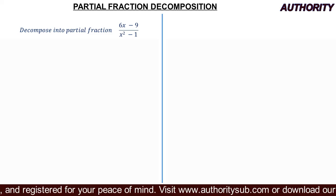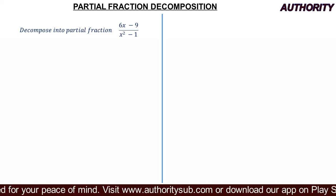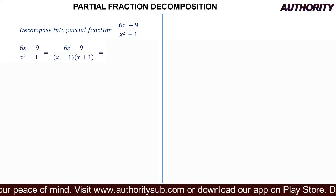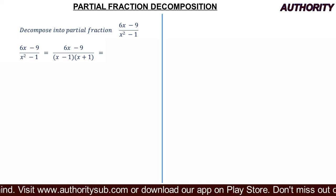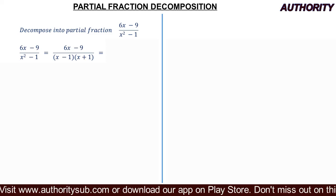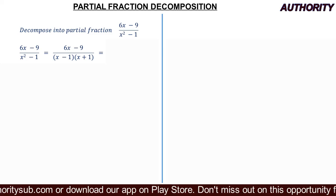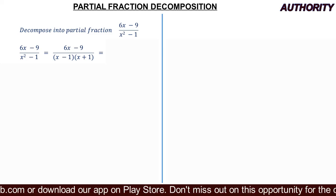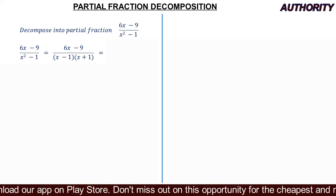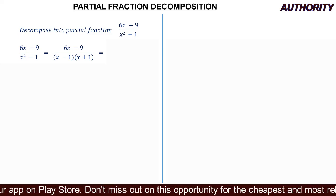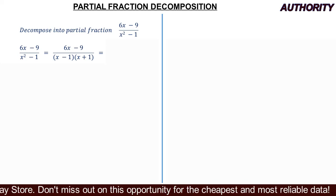x² - 1 is simply a difference of two squares, which factors as (x - 1)(x + 1). Before you continue watching, I want you to multiply out (x - 1)(x + 1), open the brackets and simplify it to confirm you get x² - 1. So the second condition is also satisfied — we've factorized the denominator.